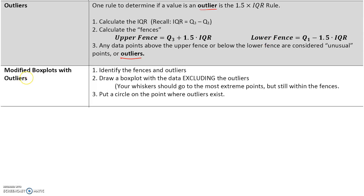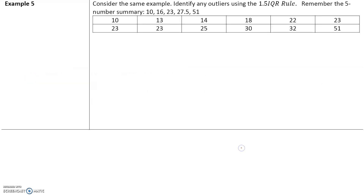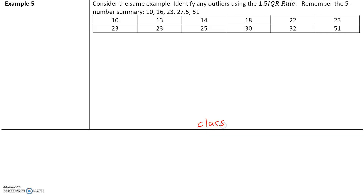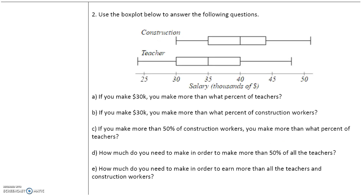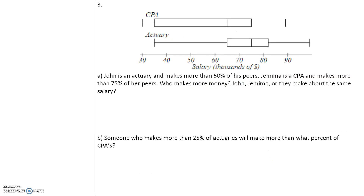We can also create modified box plots with outliers using these steps. We'll take the example and identify outliers using the 1.5 IQR rule, but we will do this in class since we haven't looked at the data set yet. The remaining examples will also be done in class, but you can try them on your own first.